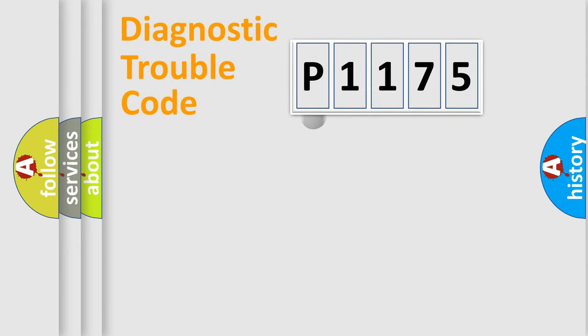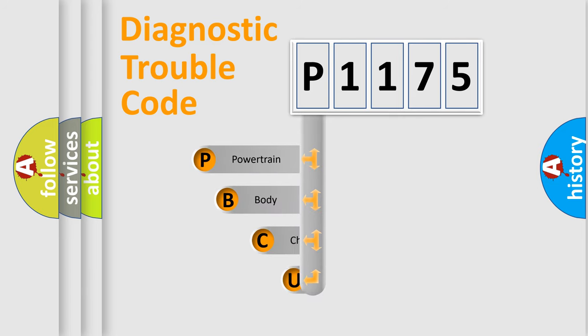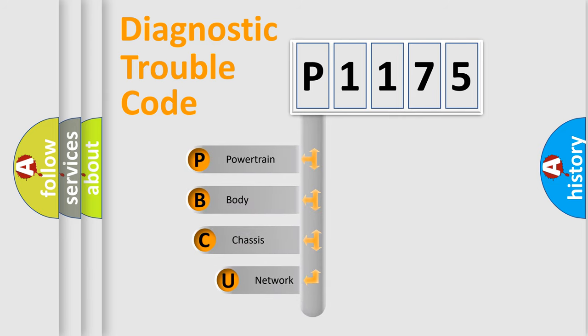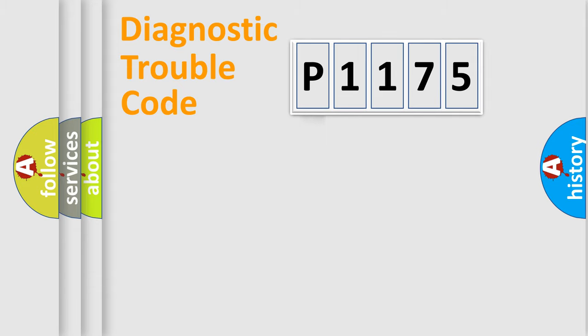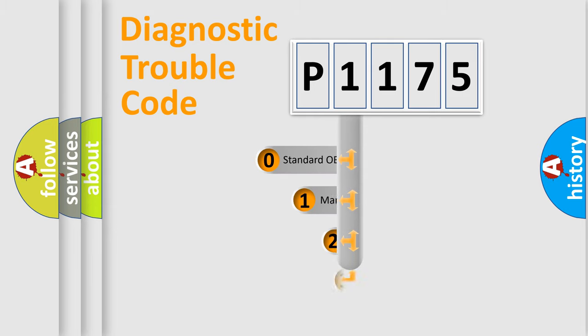First, let's look at the history of diagnostic fault code composition according to the OBD2 protocol, which is unified for all automakers since 2000. We divide the electric system of an automobile into four basic units: Powertrain, Body, Chassis, and Network. This distribution is defined in the first character of the code.